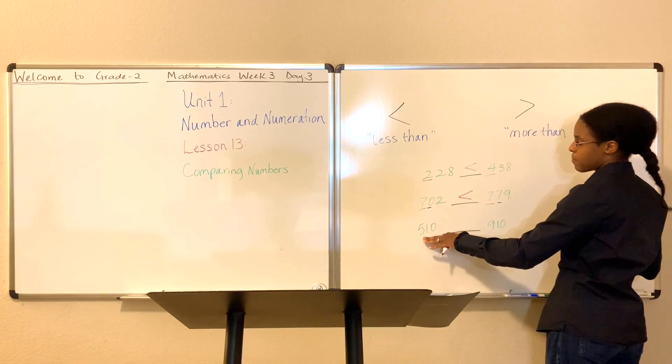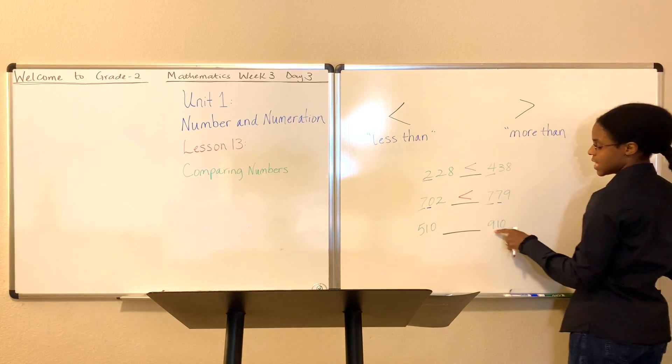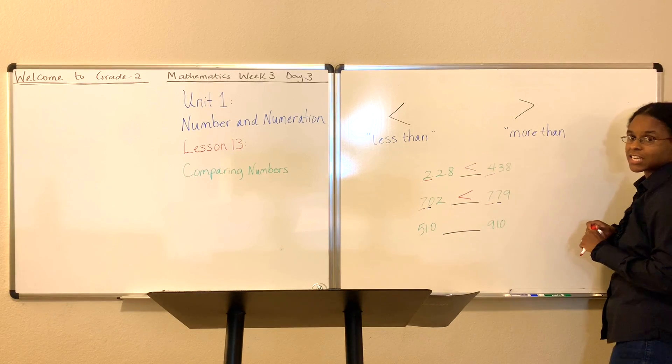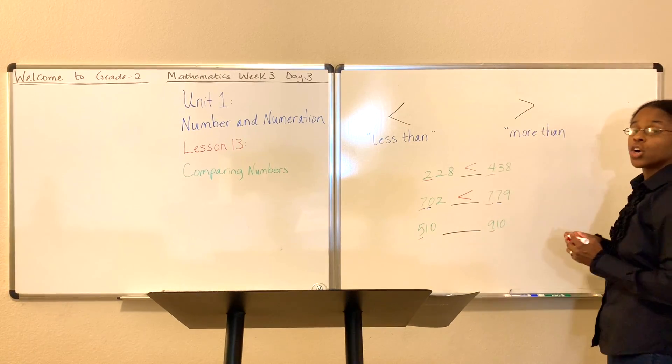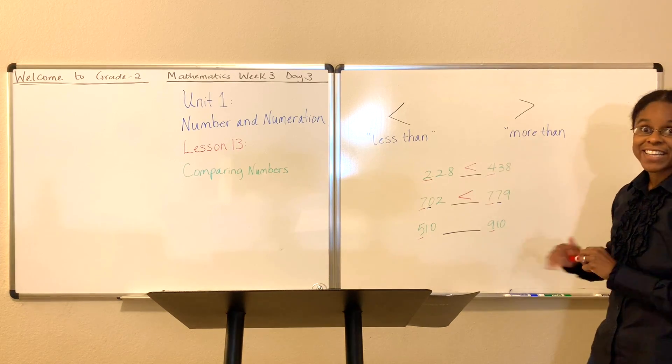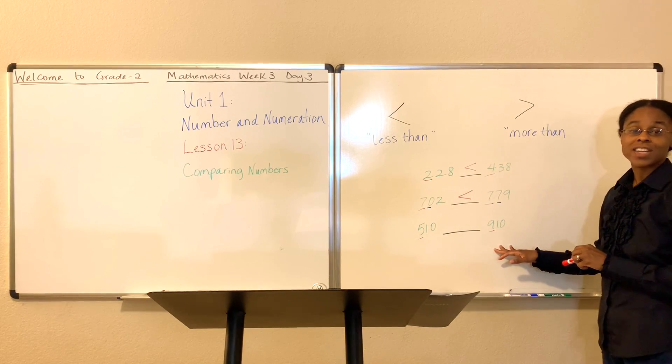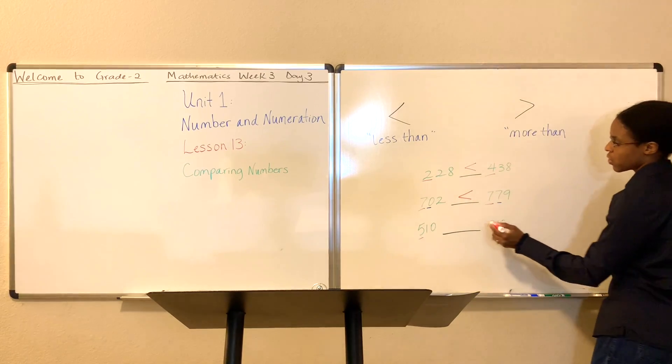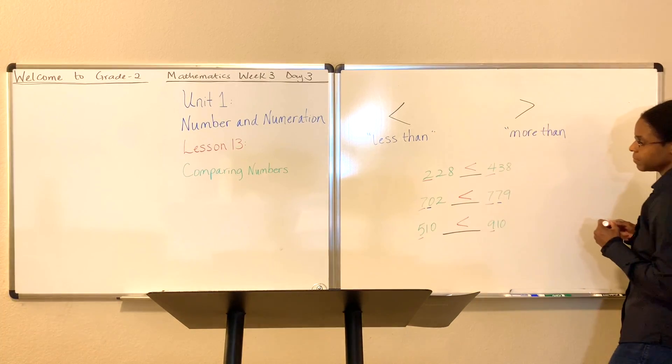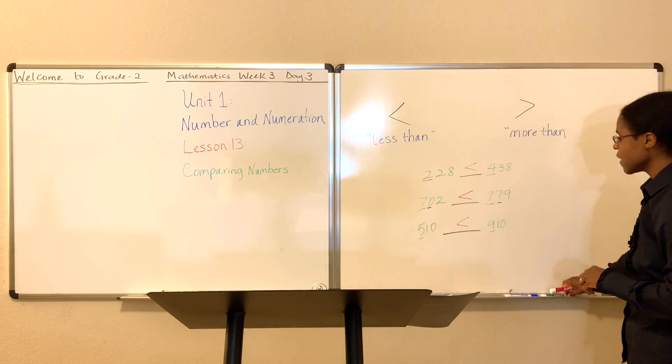Let's look at the bottom one here. We have 510 compared to 910. Let's start with the hundreds place. We have 5 compared to 9. Automatically you know 9 is a greater number. 900 is greater than 500. Therefore, the symbol is going to face this direction.